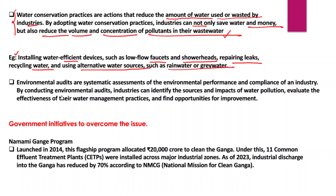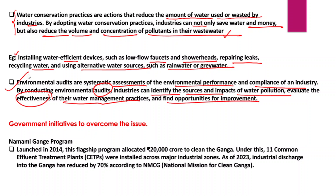Environmental audits have to be regularly conducted. Environmental audits ensure understanding of how effectively industrial effluents are polluting rivers and disturbing the existing river water ecosystem. Environmental audits are systematic assessments of the environmental performance and compliance of an industry. By conducting environmental audits, industries can identify the sources and impacts of water pollution, evaluate the effectiveness of their water management practices, and find opportunities for improvement.